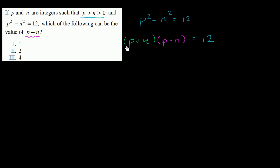We essentially have the product of two expressions equal to 12. p plus n is the sum of two positive integers, and p minus n is the difference of two positive integers. So both of these are going to be positive integers. We know p minus n is positive because p is greater than n. Let's think about all the different combinations of positive integers whose product is 12.